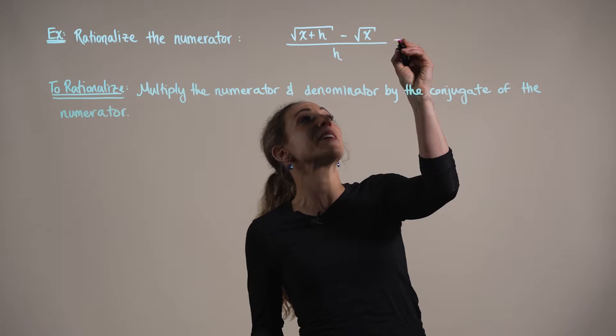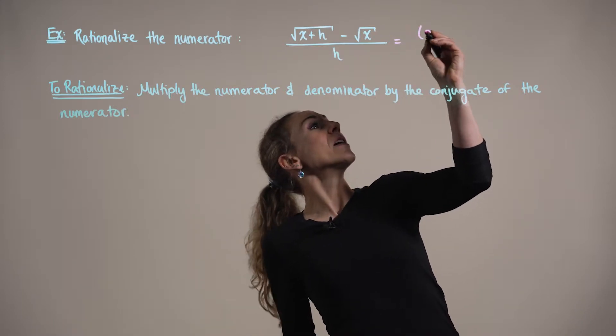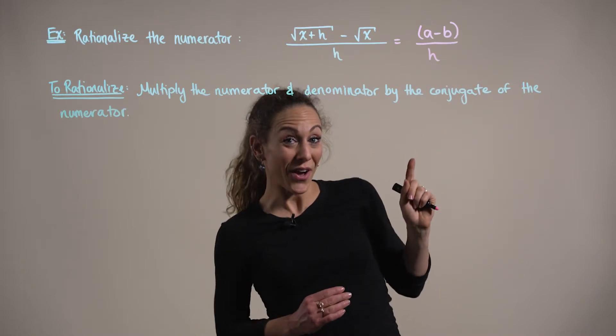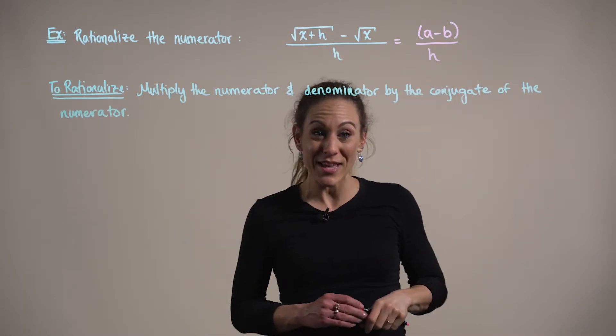We can think about our numerator here as the binomial a minus b over h. So the conjugate of a minus b is going to be a plus b.